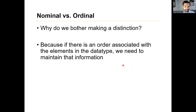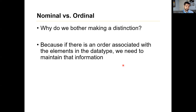So why do we bother making the distinction between ordinal versus nominal? The reason is that with ordinal data, there is an ordering amongst the data. Whether you're looking at months or year, small, medium, and large, or bachelor's, master's, PhD — there's an ordering in all those things. We want to keep that ordering information when we translate it into a numeric value, so a machine learning algorithm can leverage it when it makes predictions, classification, or whatever other task it's supposed to do.